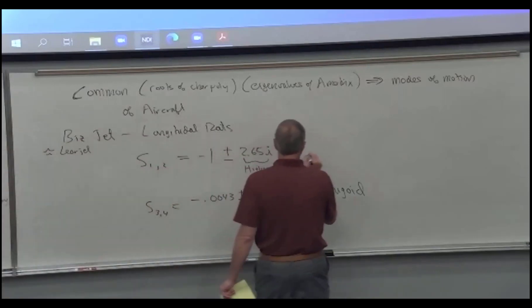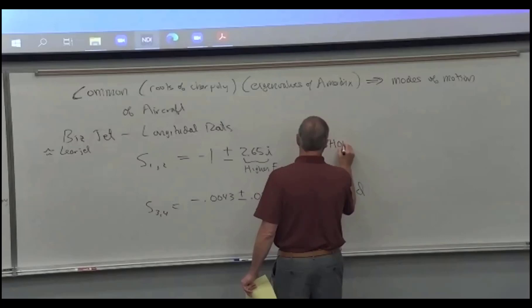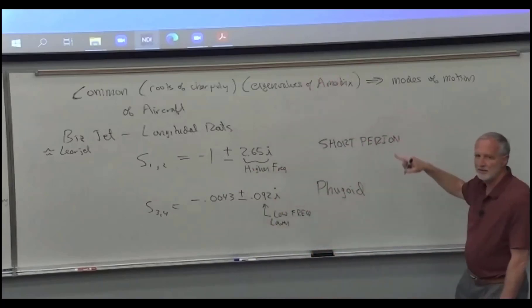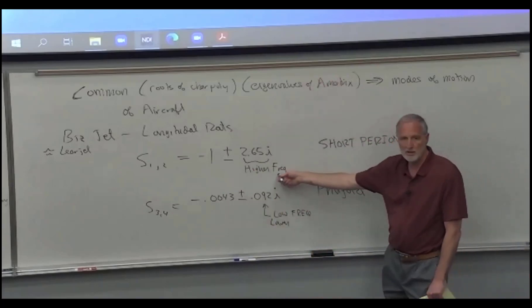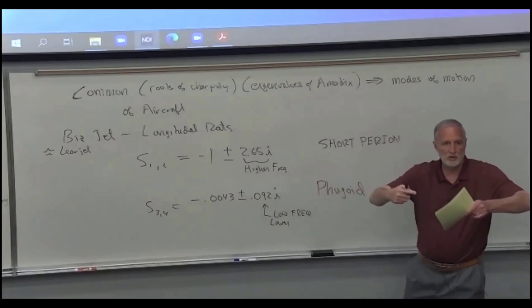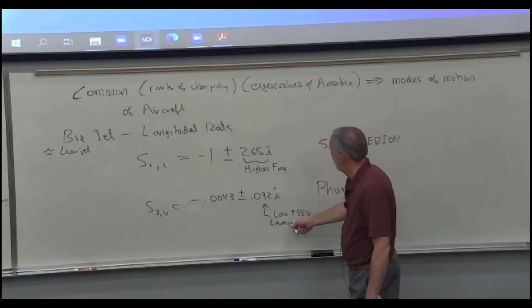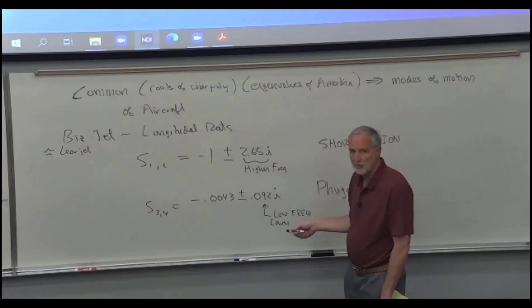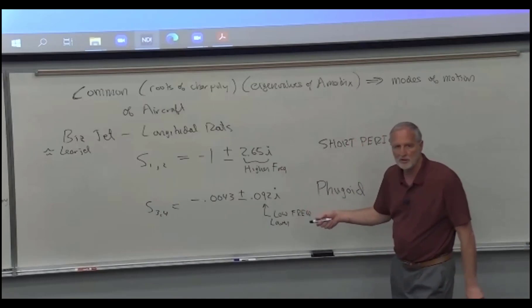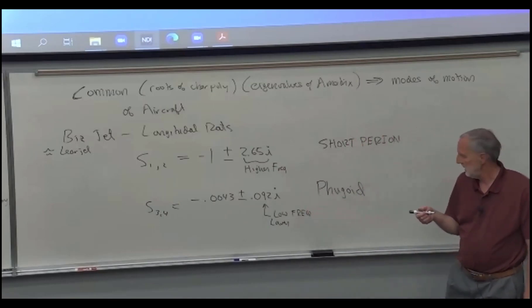So if you're looking at the two sets of roots, they don't necessarily come out in this order from the computer program or when you calculate them. You look at the one that's the highest frequency and you pick that. Then the low frequency one is what we call the Fugoid. And then people started calling this the short period. Period is the time that it takes to go through one oscillation. If the frequency is higher, the period is shorter.